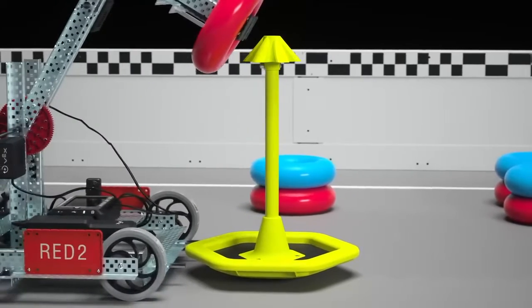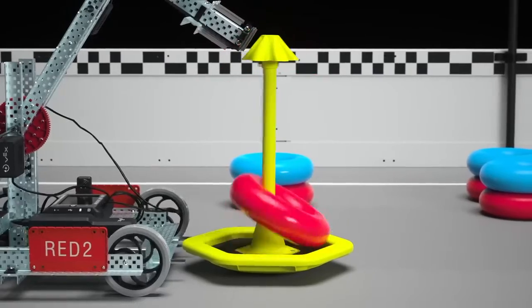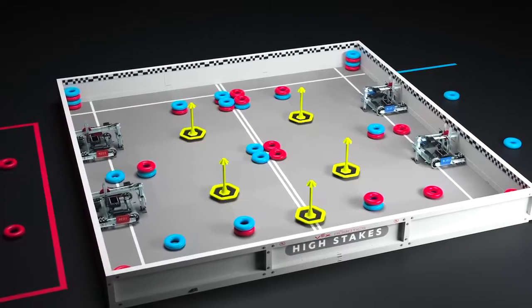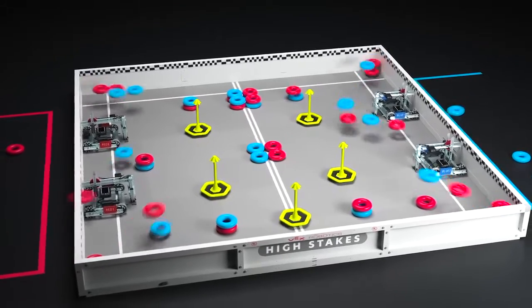Points are scored by placing an alliance's rings onto one inch PVC pipes called stakes. There are 10 stakes located around the field. Five stakes that are part of the mobile goals, which can fit six rings each.